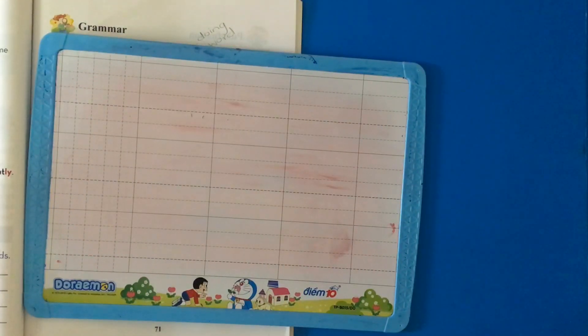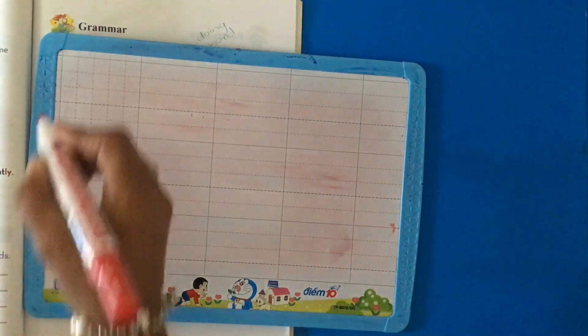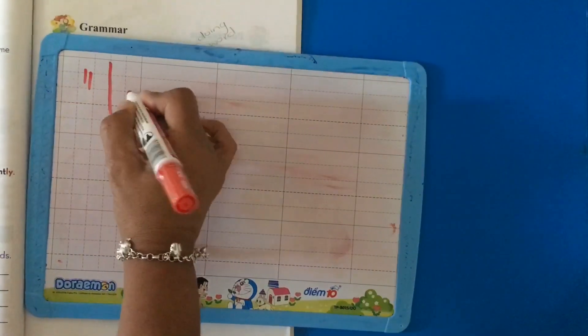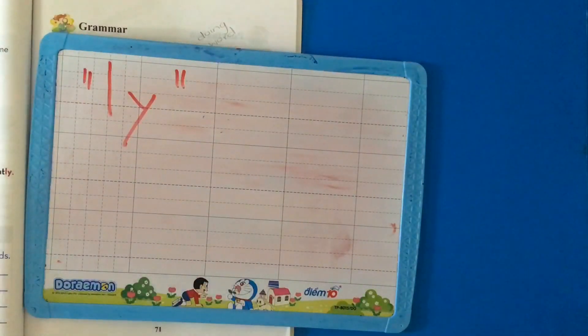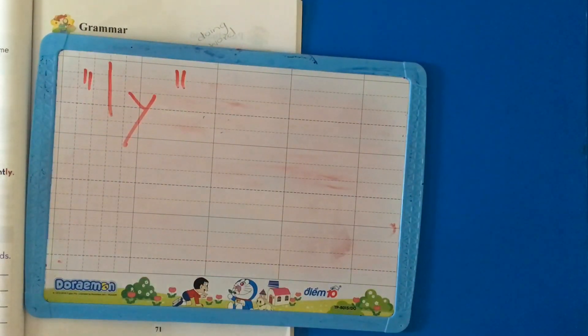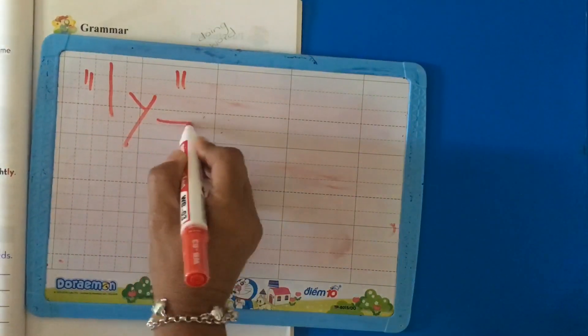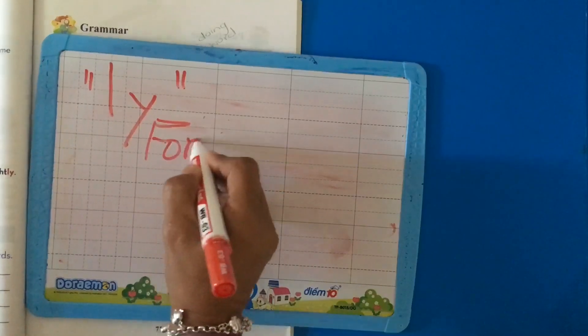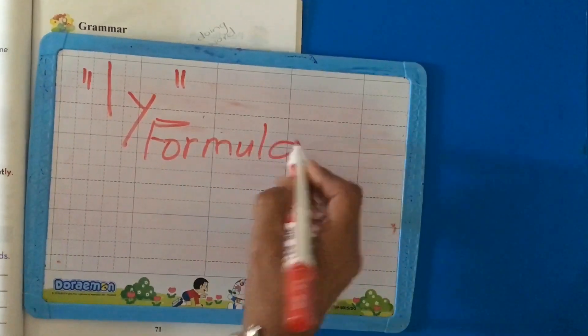So with adverbs, we add L, Y. Now remember, there are exceptions but we're going to learn about that later. We've spoken about a noun, we've spoken about a verb, adjectives and adverbs. So now we need to see the formula for adverbs.